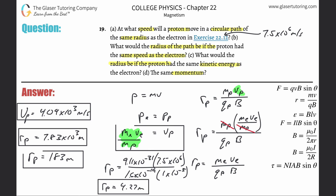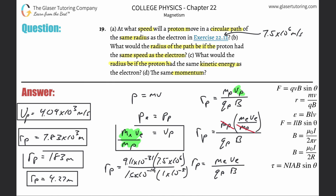That's the same exact answer as the radius for the electron. The charge of a proton equals the charge of an electron in magnitude, so it makes sense — it reduces to the same formula. So that takes care of this problem. Thank you for tuning in. Please remember to subscribe, and I look forward to helping you with more problems.